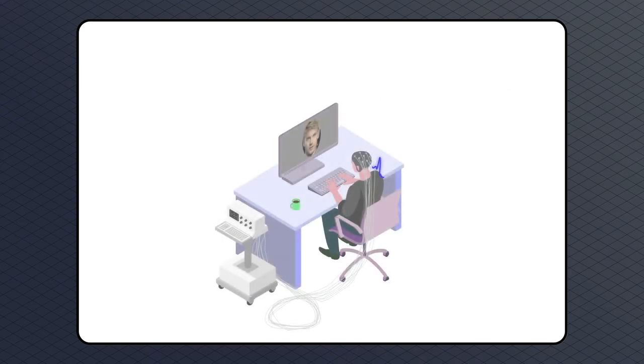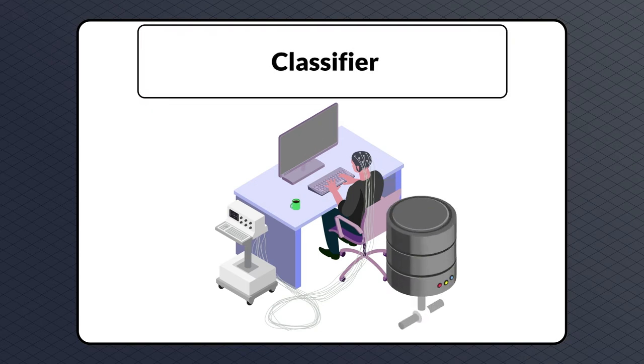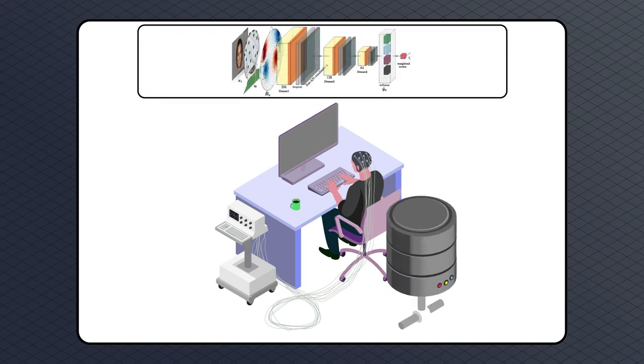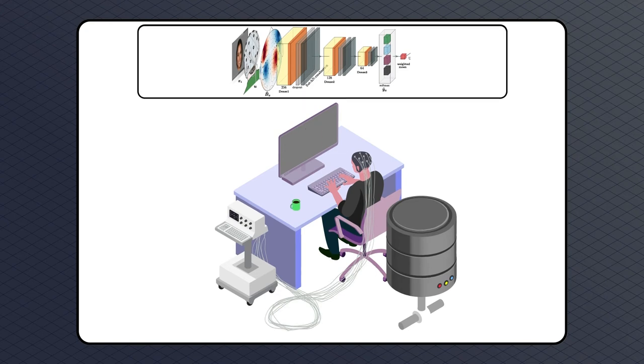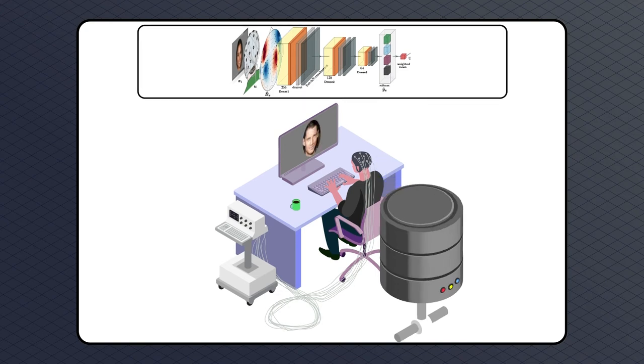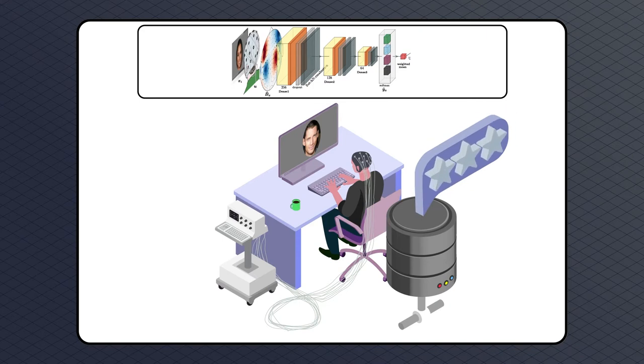After all data were collected, they were cleaned for artifacts and noise using simple techniques and filters. Next, individual classifier models for each subject were trained, using the explicit ratings as ground truth labels. These models can then take new EEG data as input and provide a preference estimation as output.